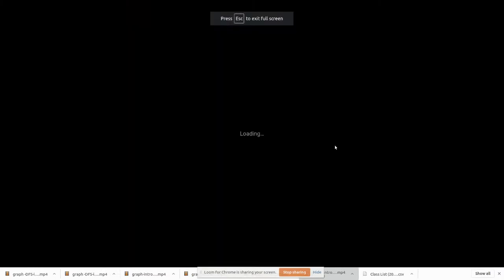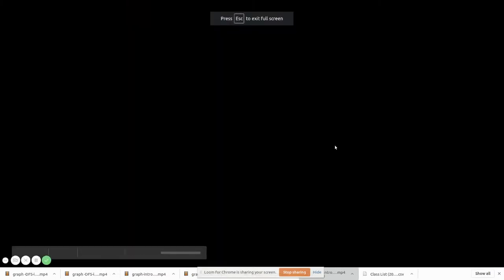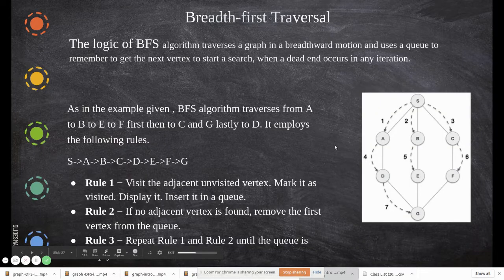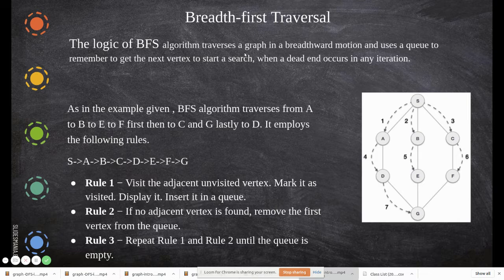In this video we are going to see the breadth first traversal of a graph. Let us take an example of this graph. The logic is this algorithm traverses a graph in a breadthward motion — breadthwise. First this, then all these nodes in level one, and then level two, finally this.